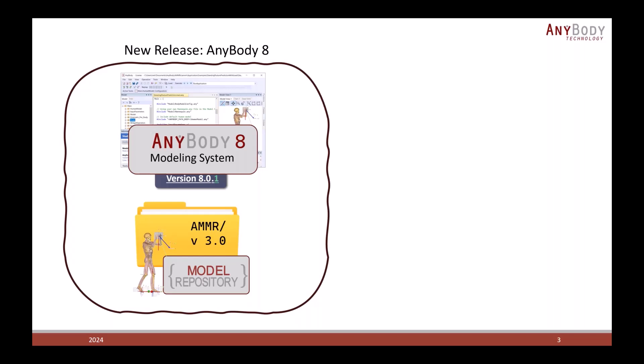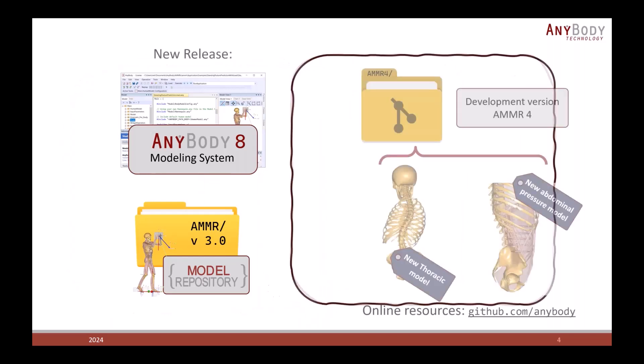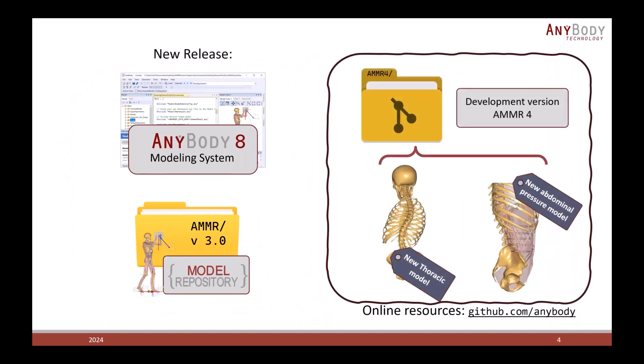Besides these two main components, we have also released a number of online resources on our GitHub page. The future version of the model repository version 4 is available already now. It has some very exciting new models, a new thoracic model and a new abdominal pressure model.